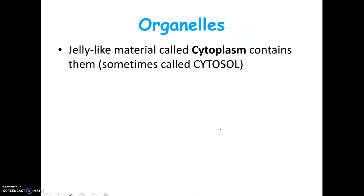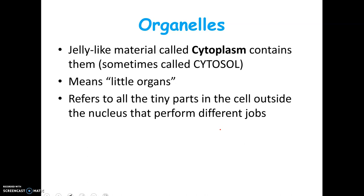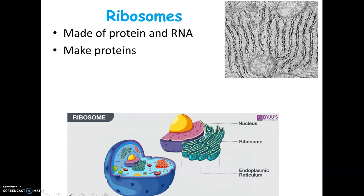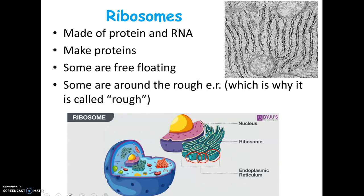There are a whole bunch of organelles, all found in a jelly-like material called cytoplasm. 'Organelle' means little organs — they're tiny cell parts that do all kinds of different jobs. The first one is the ribosome. Ribosomes look like little dots and are made of protein and RNA. Their job is to make protein — they build proteins all day. The DNA of your cell is the instructions that tell the ribosomes what proteins to make. Some ribosomes float around in the cytoplasm, while others are found around the rough endoplasmic reticulum — those dots on the rough ER are what make it look bumpy.